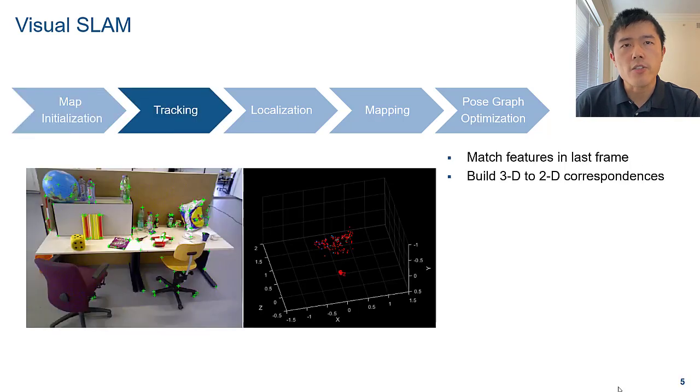Once the map is initialized, you will process each new frame as follows. In the tracking stage, you match features of the current frame with those of the past frames to build 3D to 2D correspondence. Here, the red points are the tracked map points in the current frame.